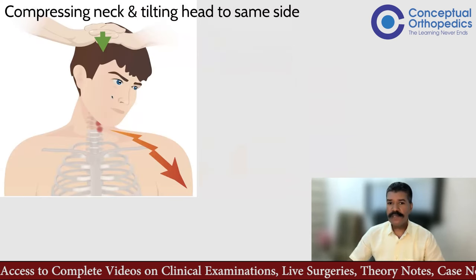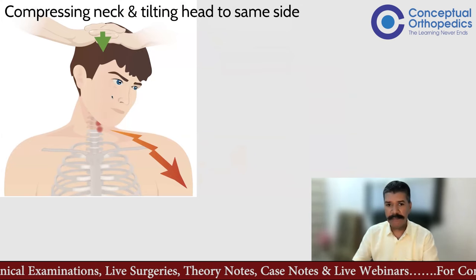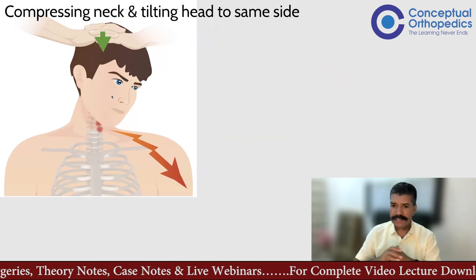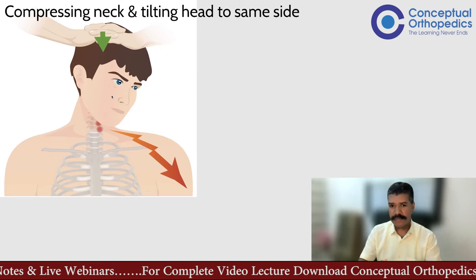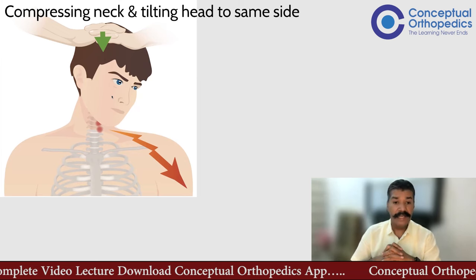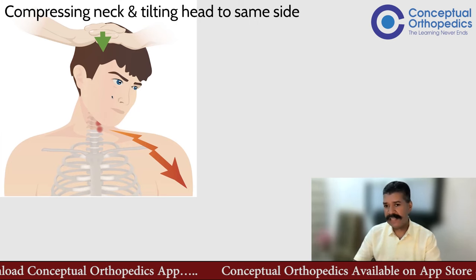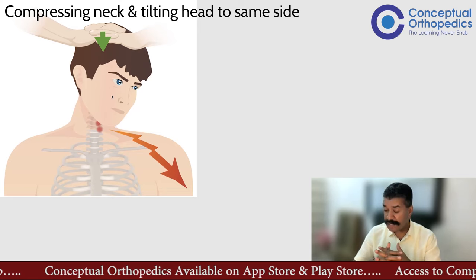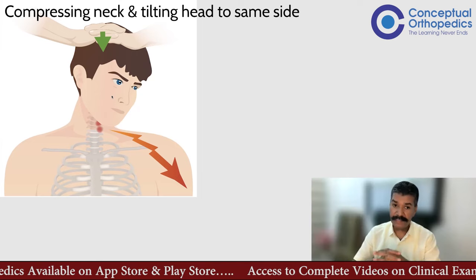The Spurling test is one of the best tests to diagnose cervical radiculopathy. For a patient complaining of neck pain with radiation to the arm — differentials being brachial neuritis, diabetic neuropathy, and cervical radiculopathy — rotate the neck slightly to the affected side, tilt the neck to the affected side, and then compress the neck. Published literature states applying approximately seven kilograms of force, though you cannot precisely quantify this. Be gentle, especially with elderly patients.